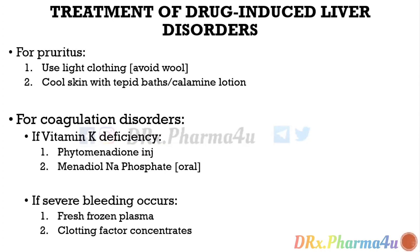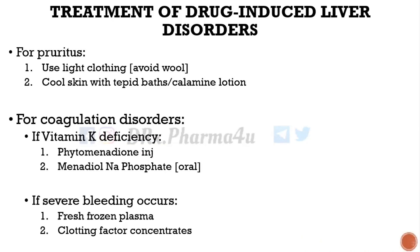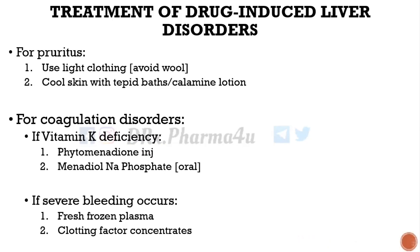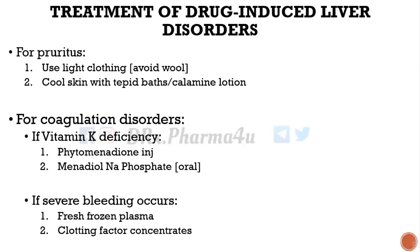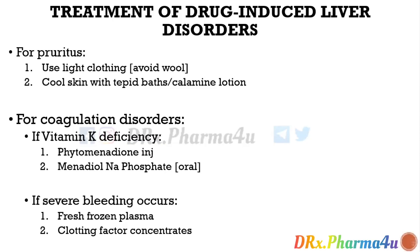If the patient is having coagulation disorders — I explained in the first video why clotting problems or coagulopathy happen with liver disease — if it is vitamin K deficiency-induced bleeding, we can give phytomenadione injection or menadiol sodium phosphate, which can be given orally. But if it is refractory bleeding not responding to these agents, meaning very severe bleeding, then we have to go for fresh frozen plasma or clotting factor concentrates.